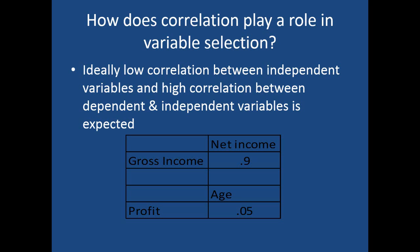The next example is about correlation between a dependent variable and an independent variable. Profit is our dependent variable and age is our independent variable. The correlation is 0.05 — a very low correlation — meaning profit of a company is actually not related to the age of the customer. They are very less related, so it is very unlikely that age will explain the variability or help in predicting profit of the organization.